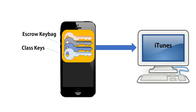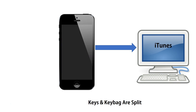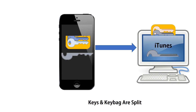When you connect your phone to iTunes, it generates another key to encrypt the key bag. Then the keys and the key bag are split in half — half of the key bag and half of the encryption key stay on the phone, and half stay in iTunes.